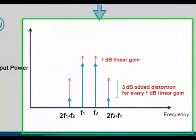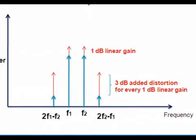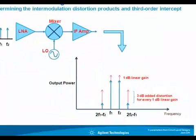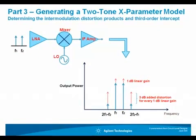The red arrows here illustrate how for every 1 dB increase in the fundamental tones, there is a corresponding 3 dB increase in the third-order intermodulation distortion products.